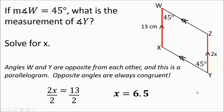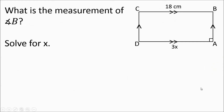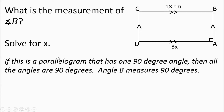For the next figure, what is the measurement of angle B? The opposite sides are parallel — this is a parallelogram — but it also has a 90-degree angle, which means everything else is 90. If a parallelogram has one 90-degree angle, then all the angles are 90. So angle B measures 90 degrees.